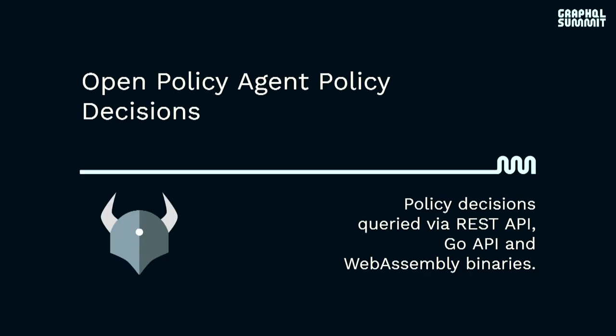Let's talk about how you get policy decisions from Open Policy Agent. There are a few options. The Agent includes a REST API. There's a Go API. And you can also compile policies as WebAssembly binaries and get policy decisions using libraries that support that. There's a Node package that is actually officially supported by the maintainers of Open Policy Agent, and some community-contributed libraries as well.